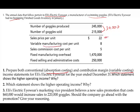The variable manufacturing cost is $8 per unit. Sales commission per unit is $5, which is also a variable cost. Fixed manufacturing overhead is $1,470,000. Fixed selling and administrative expense is $250,000. We are going to answer several questions, starting with preparing a variable costing and an absorption costing income statement.